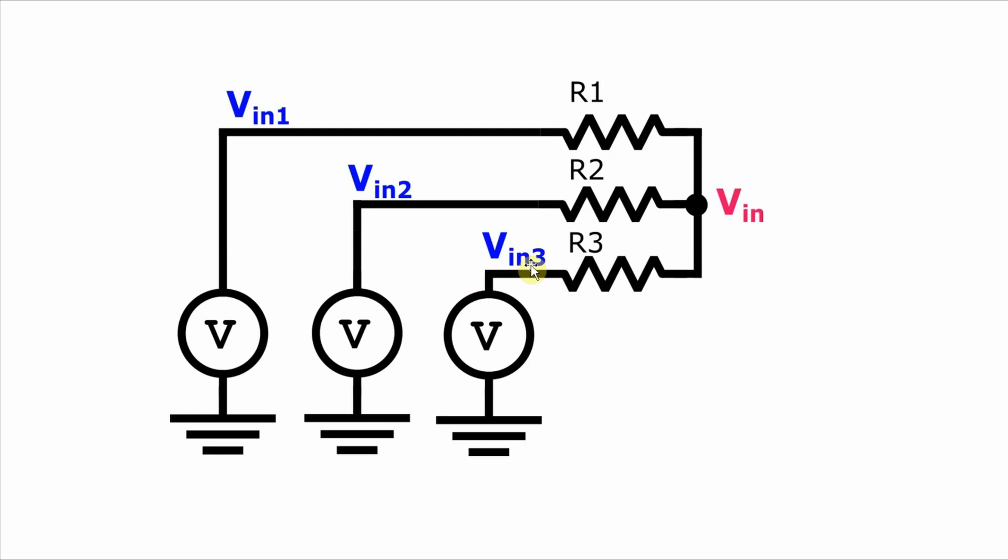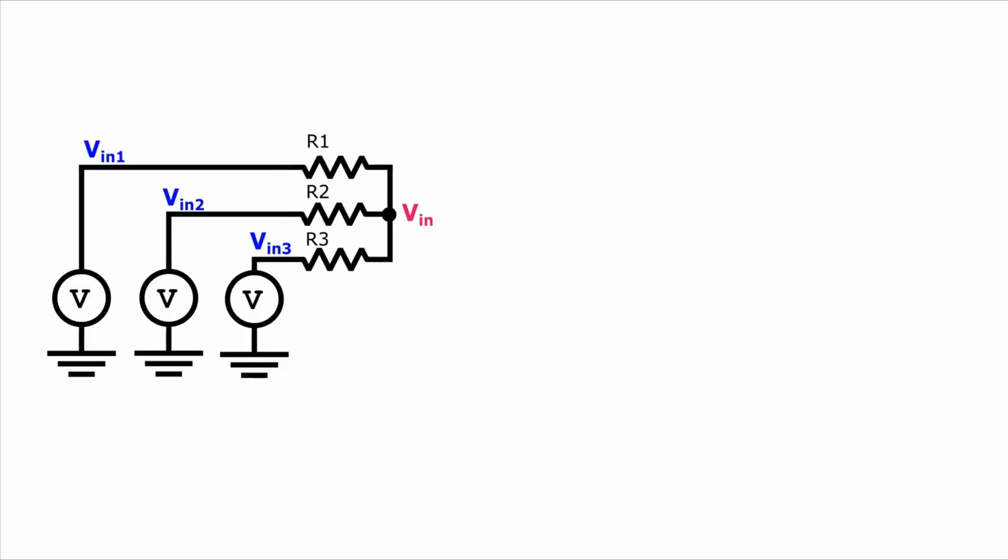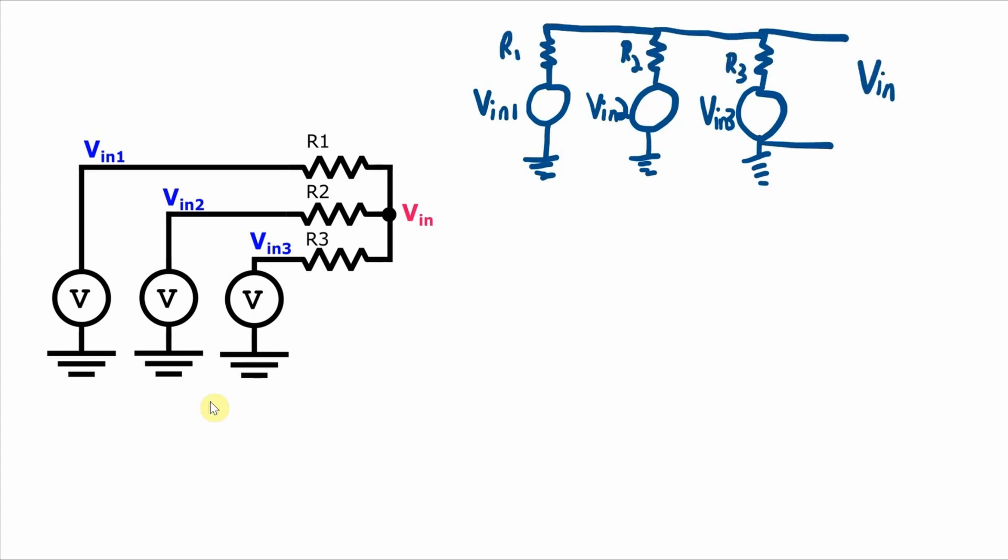There is a simpler approach though, and that is to use Millman's theorem. And Millman's theorem applies in the specific case where you have a set of parallel source resistor circuits. And it may not be super obvious looking at the circuit like this that we have three parallel source resistor circuits, but I can redraw the circuit to look like this.